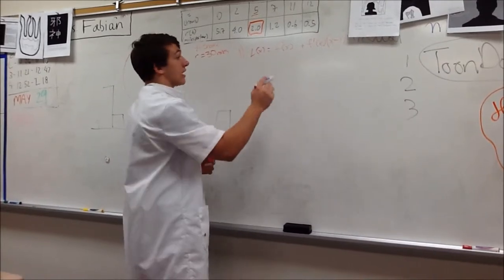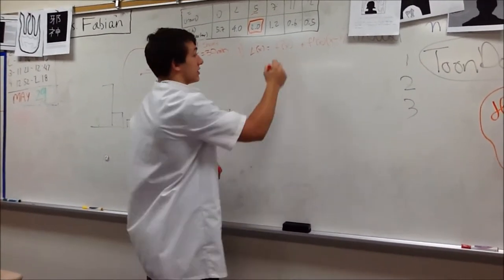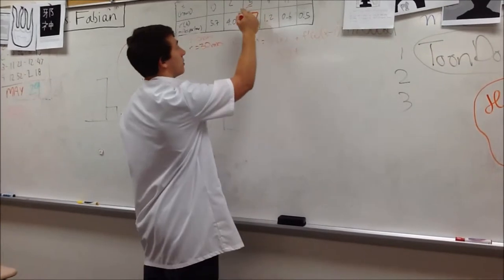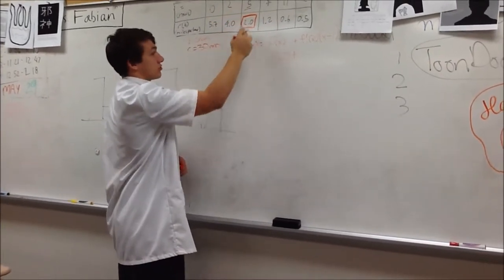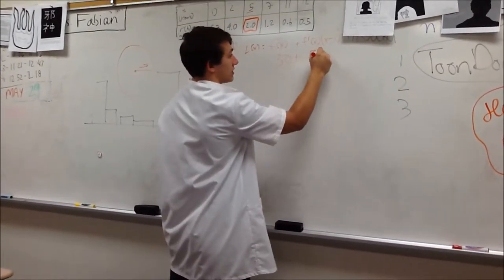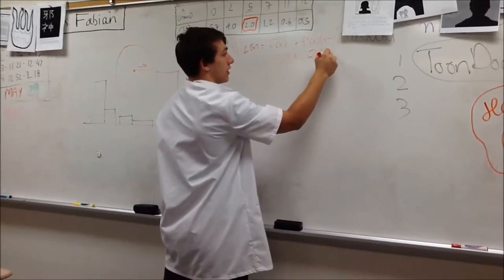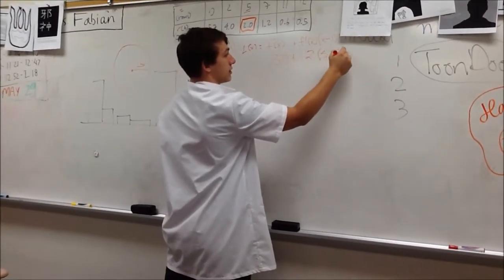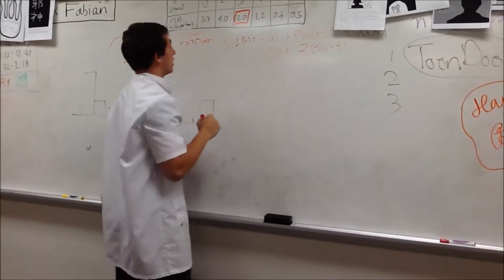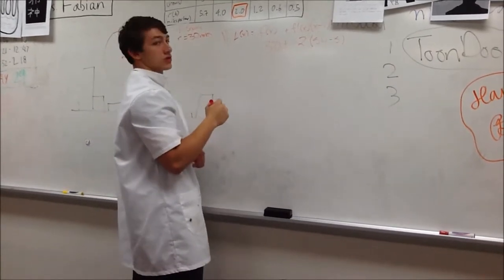We know that f of x at t equals 5 hours is 30 miles plus f prime of x at t equals 5 hours, which is 2, minus the x-dominated time minus the original time in which the radius was 30 miles.